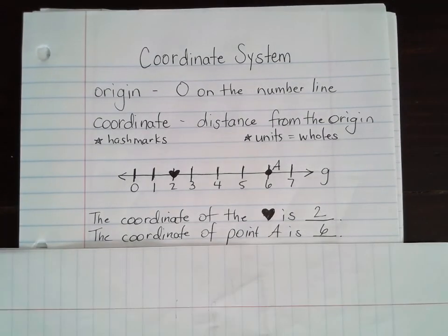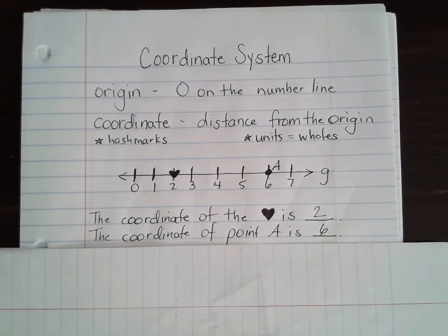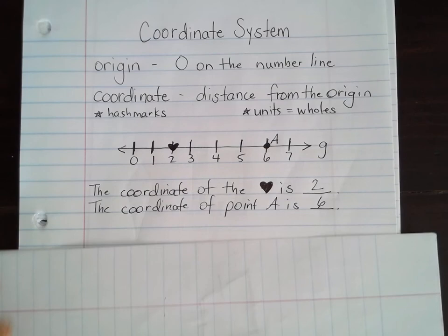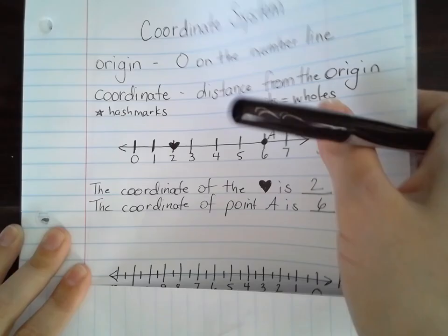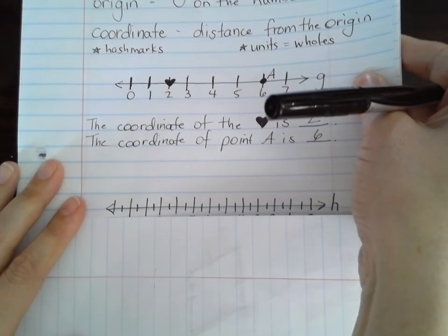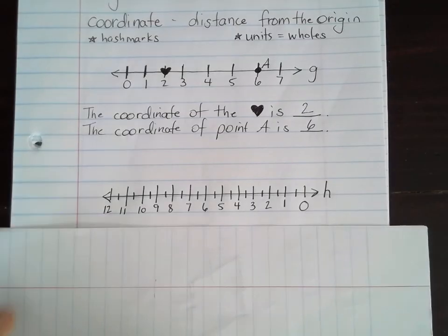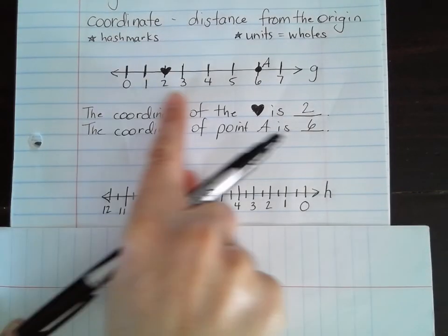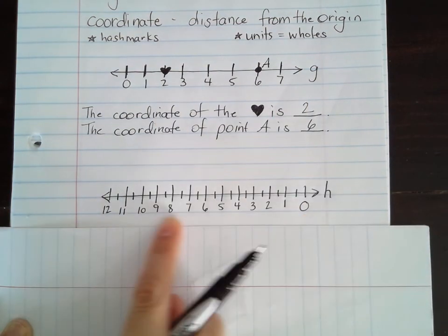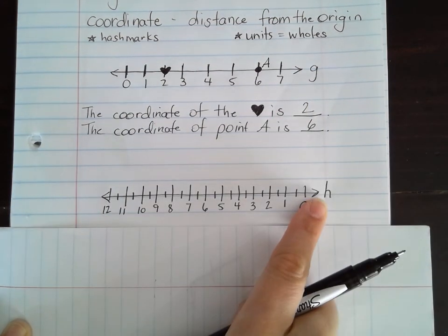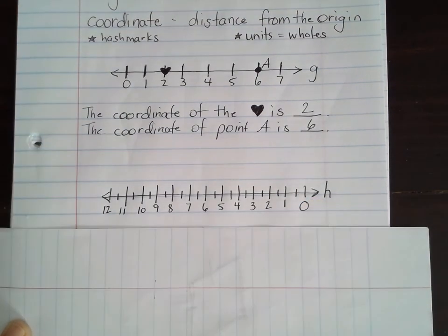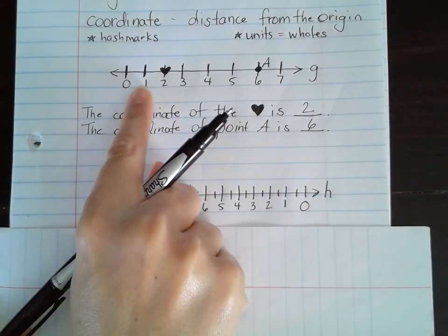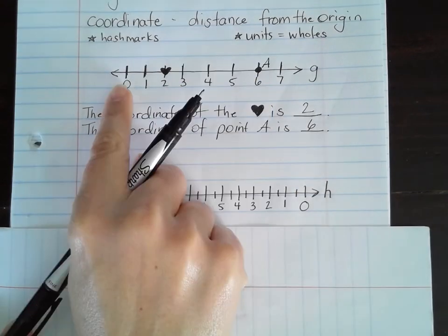I know this is really basic, but we're going to build on this in the next lesson. The only other thing I want to show you is that a number line can also go from right to left, as long as it's going from least to greatest or greatest to least. I've labeled this line H. Up here on line G, my numbers were counting by wholes — one, two, three, four, five. We're counting by ones.